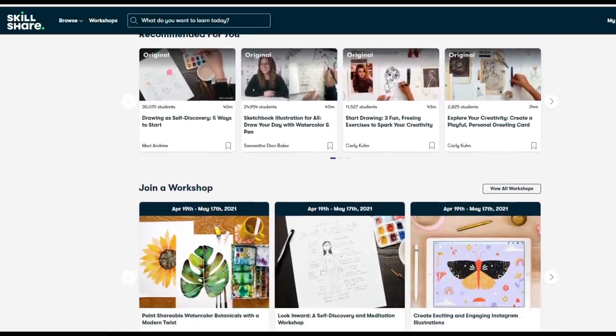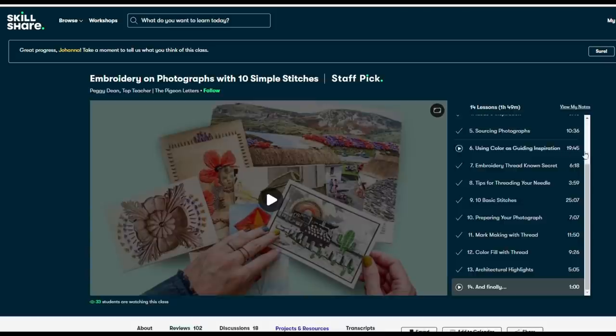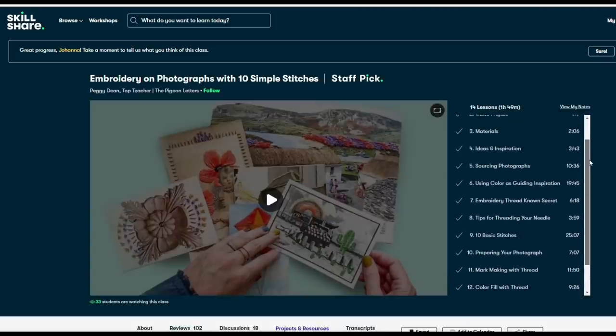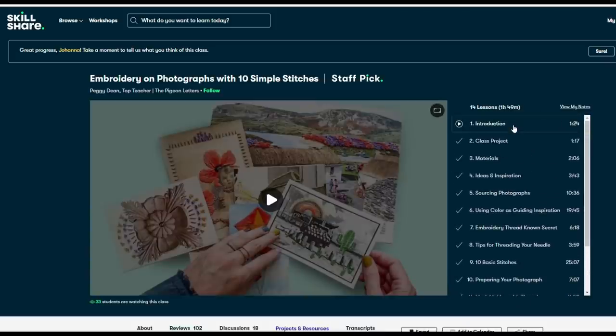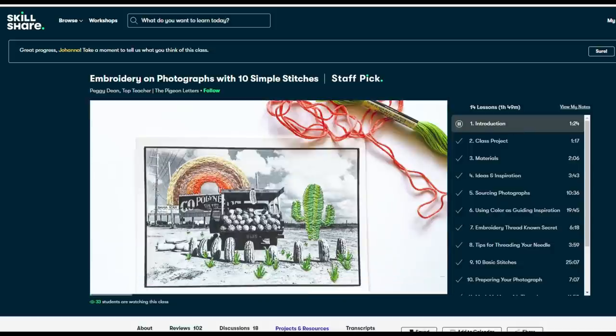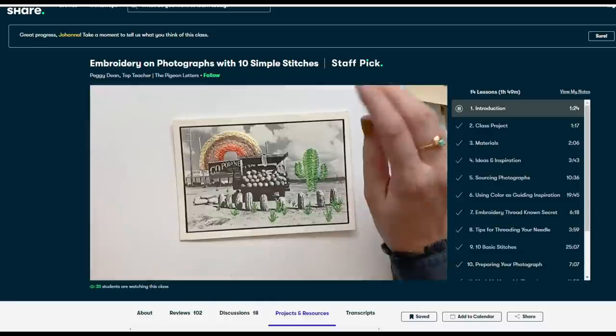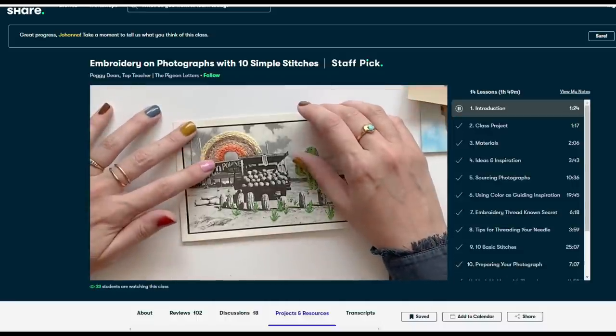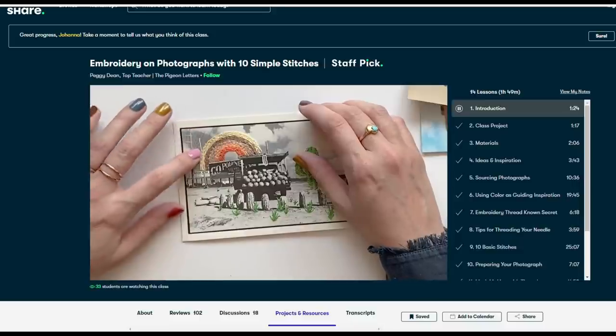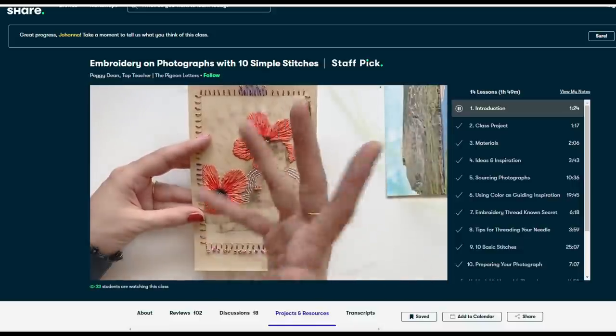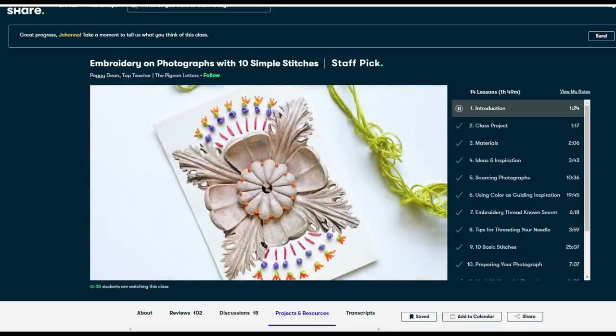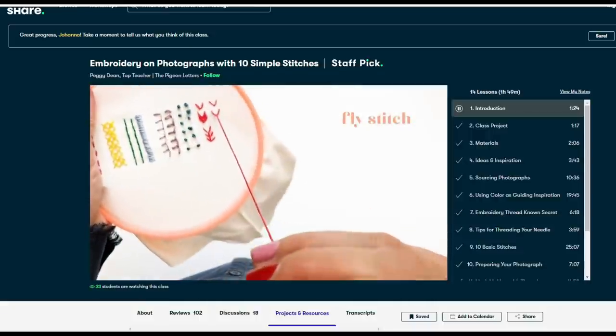I just finished up this class by Peggy Dean called Embroidery in Photographs with 10 Simple Stitches. This class stood out to me because I thought that it would be such a fun technique to include within junk journals or even just within your journal pages. Peggy takes you through every step making it so easy and fun, and it just adds so much texture and interest. It's such a cool art form that you can really do from anywhere.